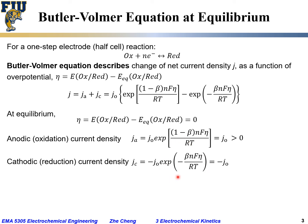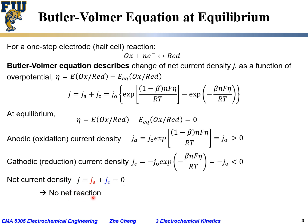The cathodic current density j_c is the second term with the negative sign, so j_c = −j₀ × exp(−βnFη / RT). With η = 0, exp(0) = 1, so j_c = −j₀, which is always negative. At equilibrium both the anodic and cathodic currents are nonzero — j_a = +j₀ and j_c = −j₀ — but the net current j = j_a + j_c = j₀ − j₀ = 0.